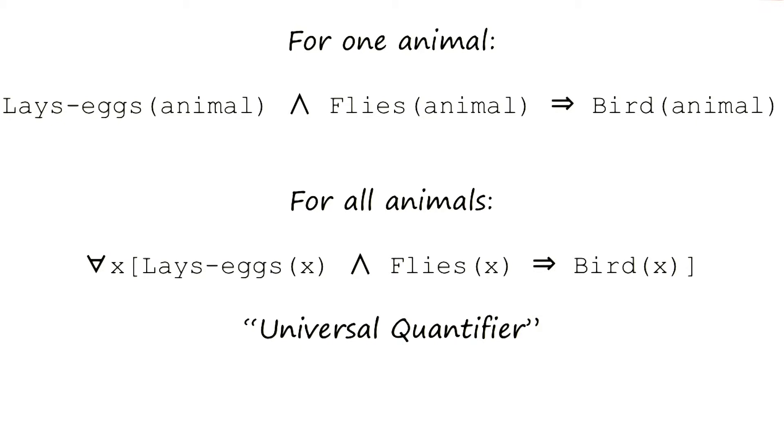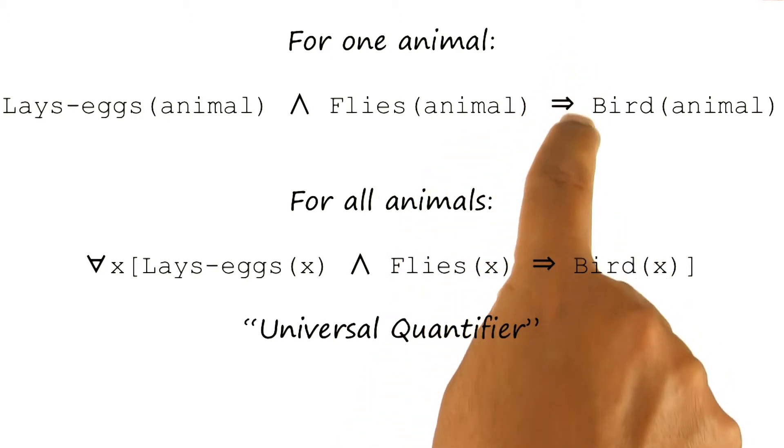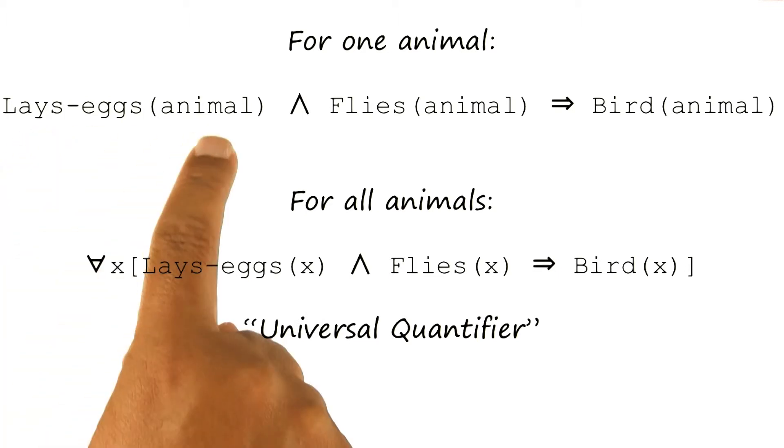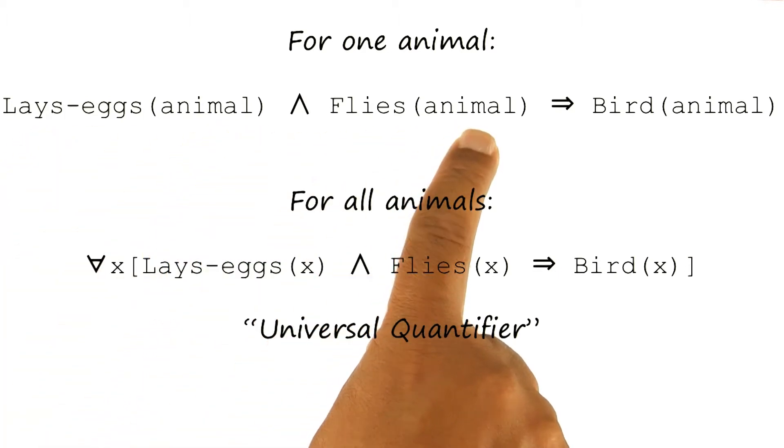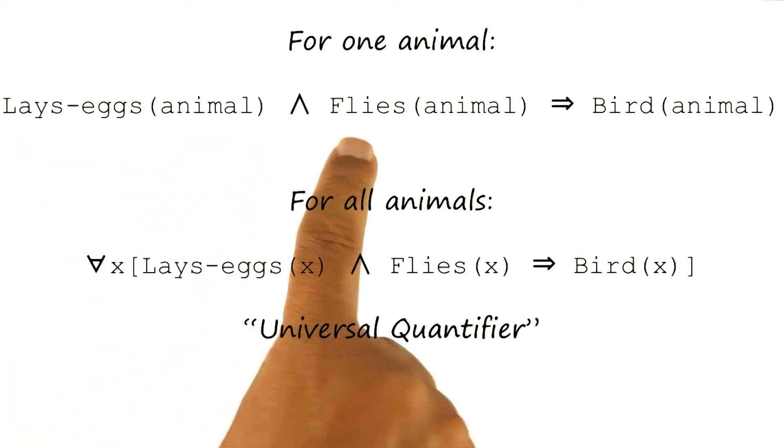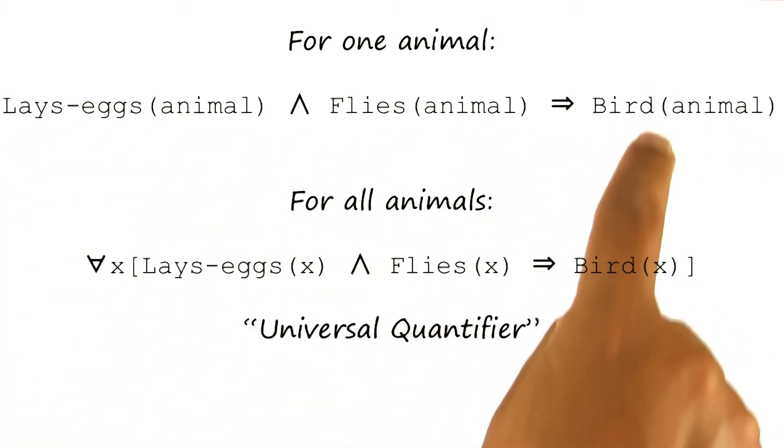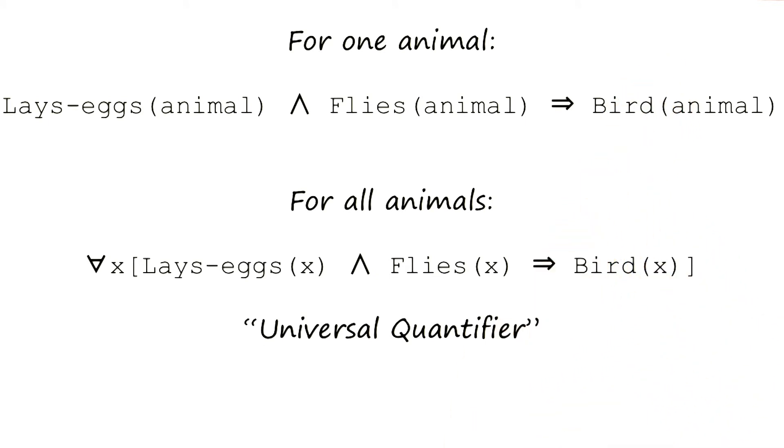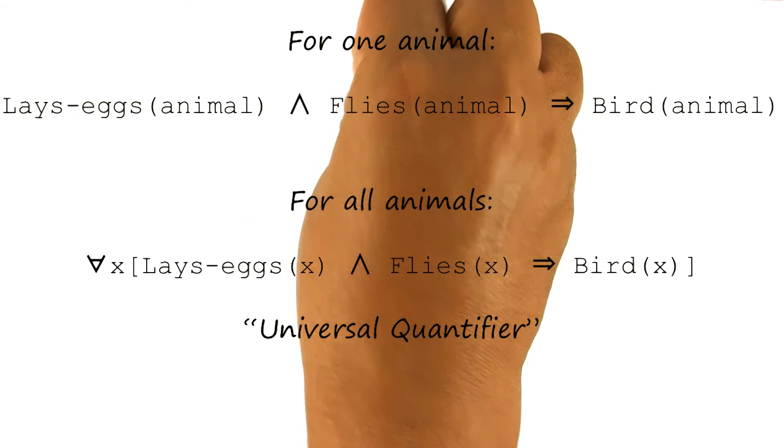One thing to note here is that I could have rewritten this sentence with a universal quantifier back into propositional logic by having lots of sentences like this. So I could have said lays eggs animal 1, flies animal 1 implies bird animal 1, and so on and so forth for each and every animal that is possible. But by writing it in the form of a variable and universal quantifiers, I can reduce the number of sentences I have to write into just one sentence.